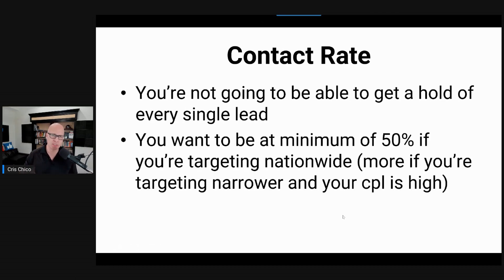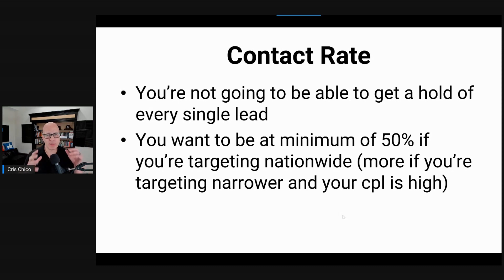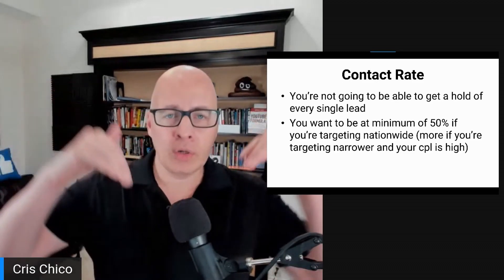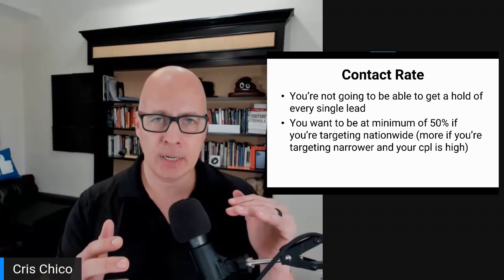We have metrics we go by. At a minimum, we want a contact rate of 50% when targeting property owners nationwide. However, if we narrow down the area we're targeting for Facebook ads, we want that contact rate to be higher than that, because we are paying more per lead. The wider the area, the lower the cost per lead.